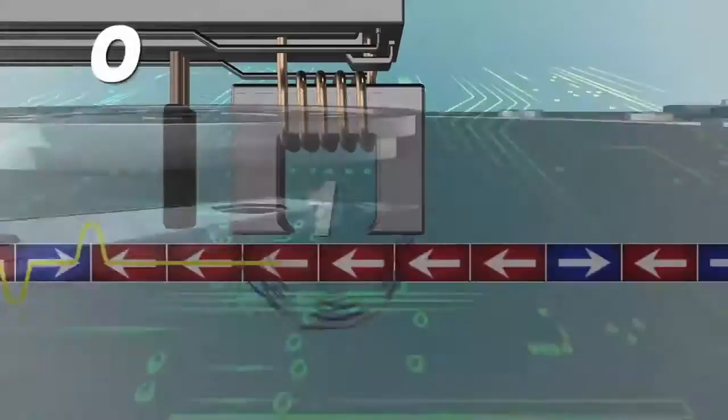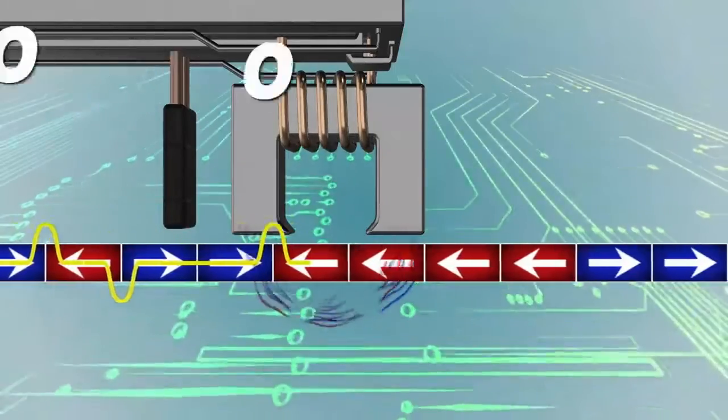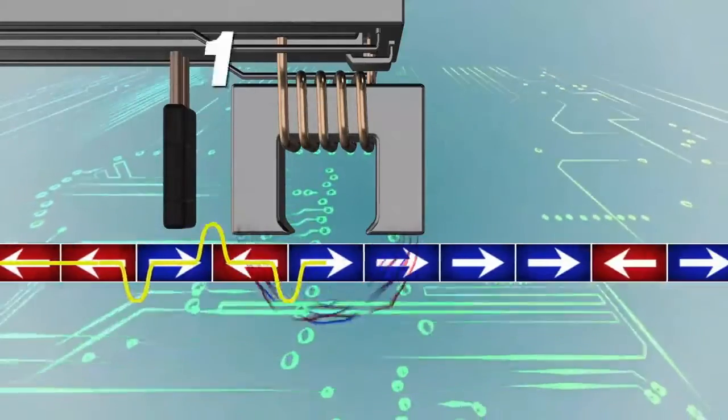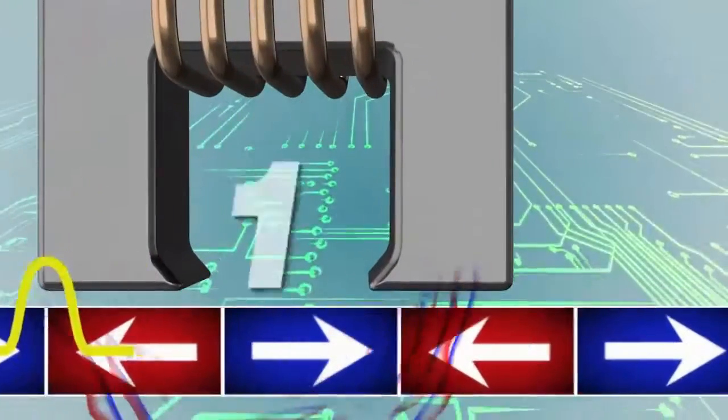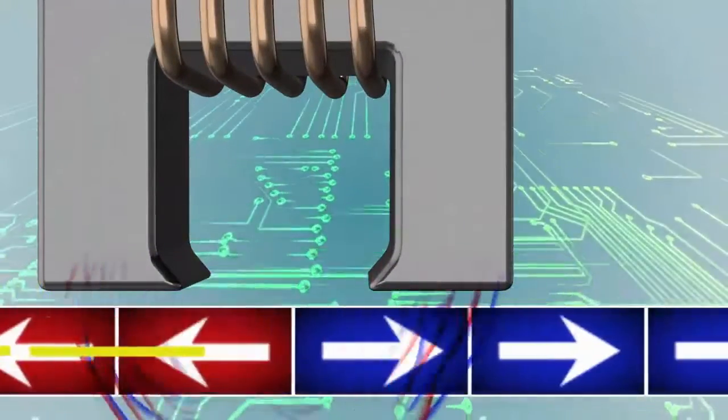Data is written onto the disk by converting strings of bits into electrical current fed through an electromagnet. This magnet generates a field strong enough to change the direction of the metal grain's magnetization.